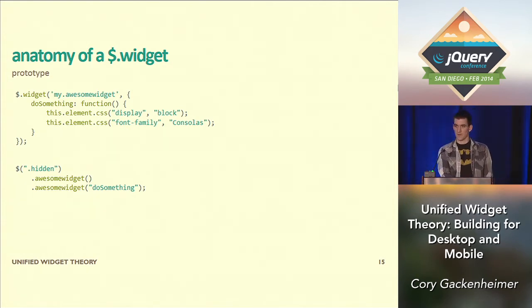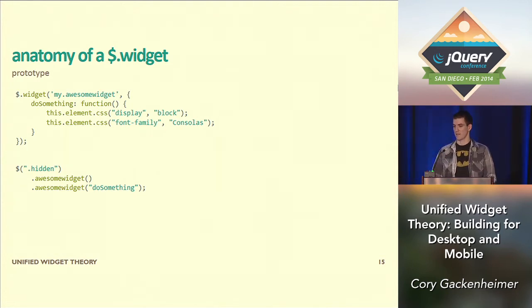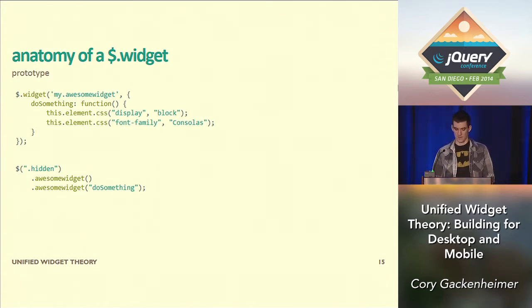So if I want to use it, I just find my element — in this case it was some hidden class — I initialize it, and then I call my method 'do something', and it would change the font family to Consolas.